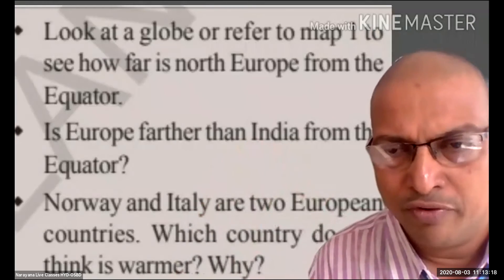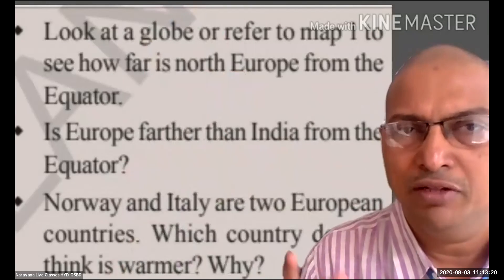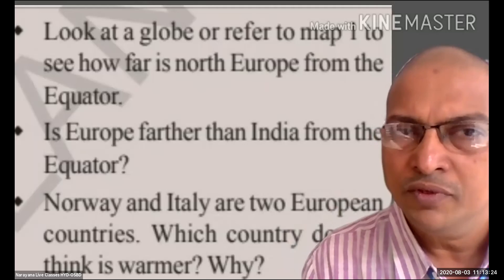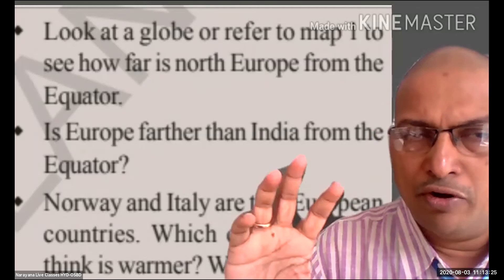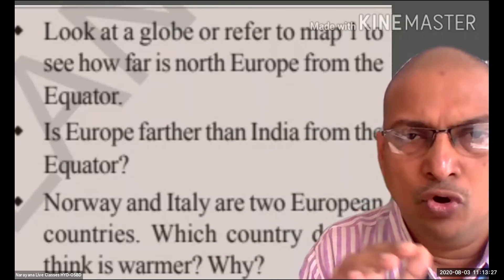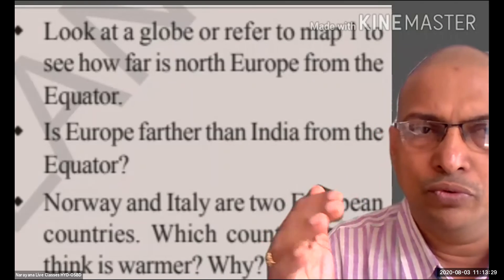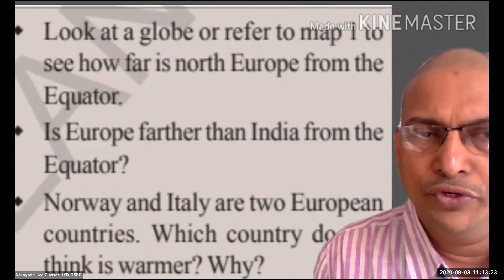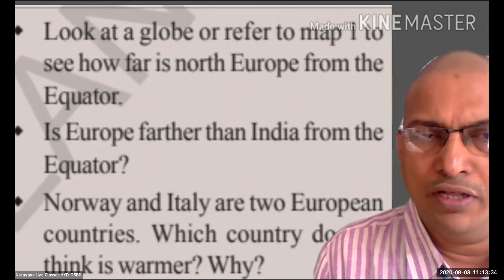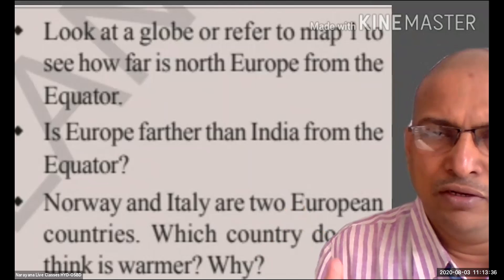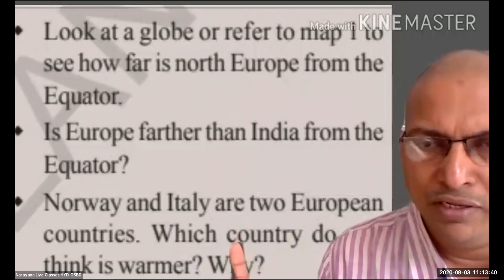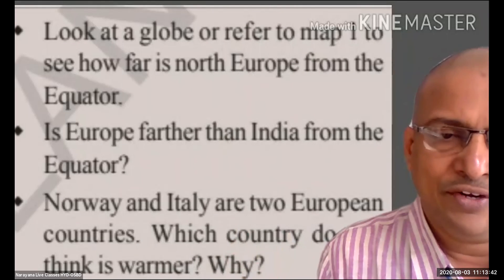What is the main reason for the difference between our climate and Europe's climate? We are nearer to the equator; they are far away from the equator — that is the main reason. You have to check your global atlas to learn about the distance from the equator. Is Europe further than India from the equator? Yes, it is very far away from the equator compared to India.